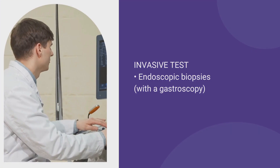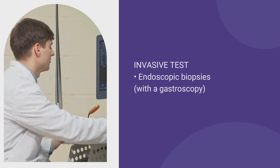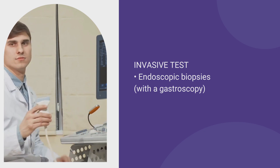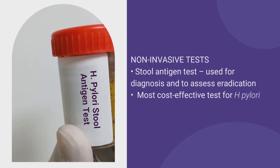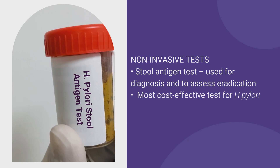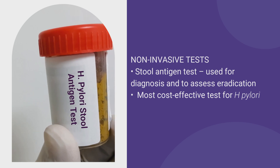There are two types of tests to diagnose H. pylori. The first is an endoscopic test — an invasive test where biopsies are taken during endoscopy, often done when ulcers or gastritis are found. Then there are non-invasive tests. The stool antigen test is really good because it can both diagnose H. pylori and confirm eradication. There is also a blood test, but it can only confirm a current or past infection — it cannot confirm eradication, only that you had H. pylori at some point.